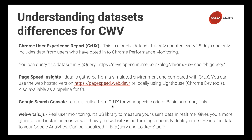With web-vitals.js, you send the Core Web Vitals data to a Google Analytics 4 property. From there, you can connect your Google Analytics to BigQuery and visualize the data. Even better, you can send it to Looker Studio, and Google provides a Looker Studio template specifically for Core Web Vitals that gives you all the nice graphs and everything.